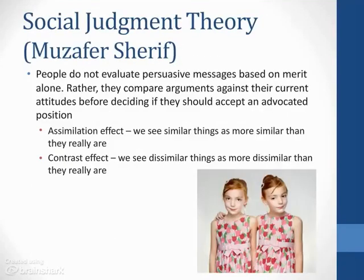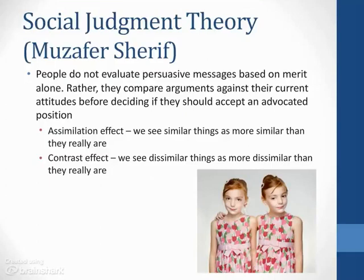Our seventh theory, social judgment theory, postulates that people do not evaluate persuasive messages based only on the merit of the message itself. Rather, social judgment theory suggests that people compare arguments against their current attitudes before deciding if they should accept an advocated position. Current attitudes become crucially important as they serve as reference points or anchors for our evaluation of persuasive messages. We may see similar things as more similar than they really are when making these comparisons — this is called the assimilation effect, where we find attitudes that match our anchor points and assimilate them more readily. The contrast effect is just the opposite: we may see dissimilar things as more dissimilar than they really are.